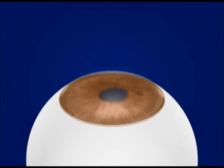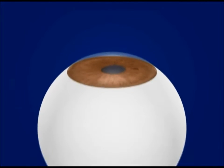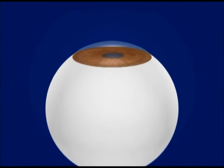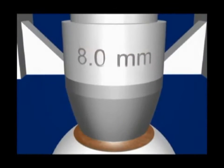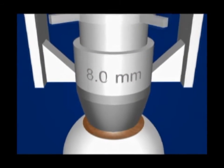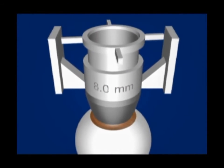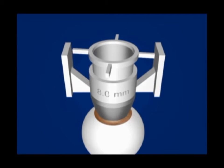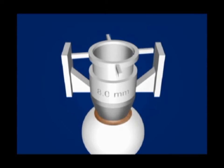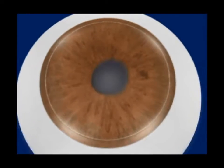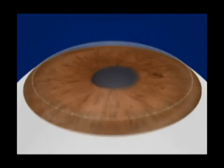Let's see how we create the donor lenticule. We begin by taking a whole globe donor eye and an eight millimeter suction tray. A fine is used to create a 300-micron deep groove on the corneal surface. Using this groove as a guide, the cornea is dissected with a crescent blade in a lamellar fashion.